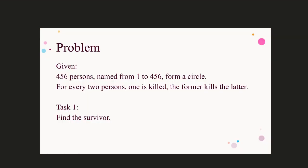Here is the problem. Given 456 persons, each of them is given a number from 1 to 456. They line up according to the numbers to form a circle. The rule of the game is that for every two persons, one is killed in the way that the former kills the latter. So by the end of the game, 455 persons are killed and one is left. The task is to find out the person left, that is their survivor.